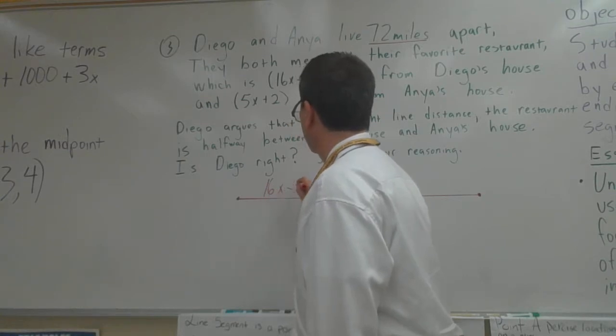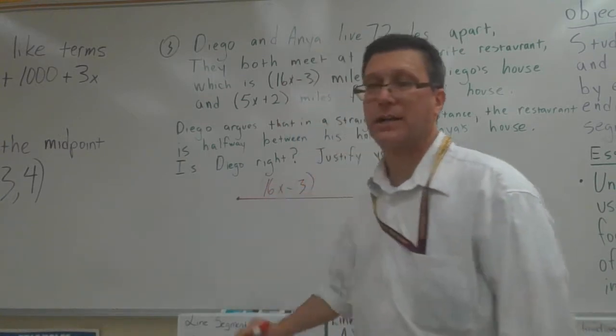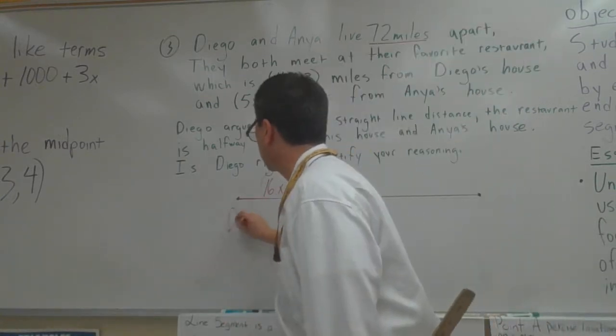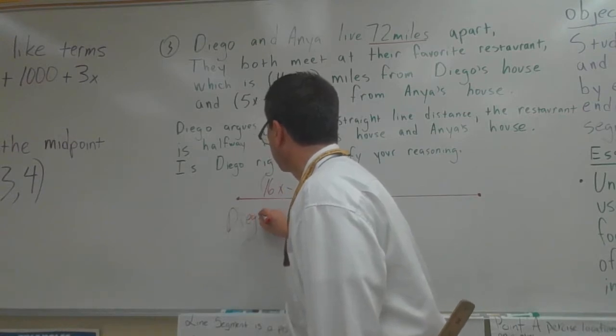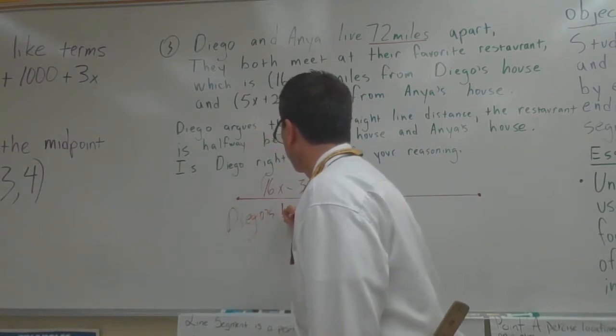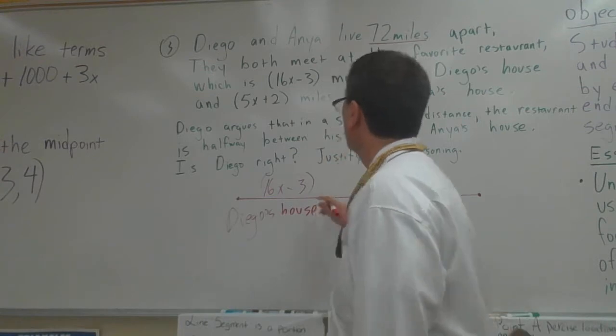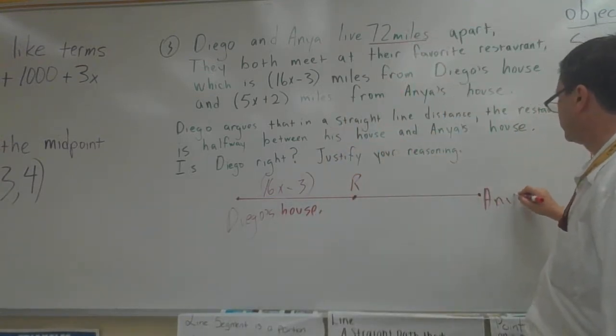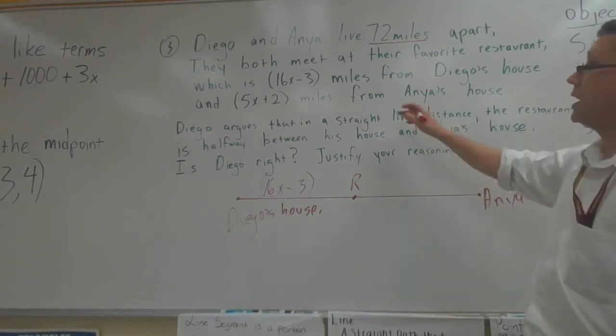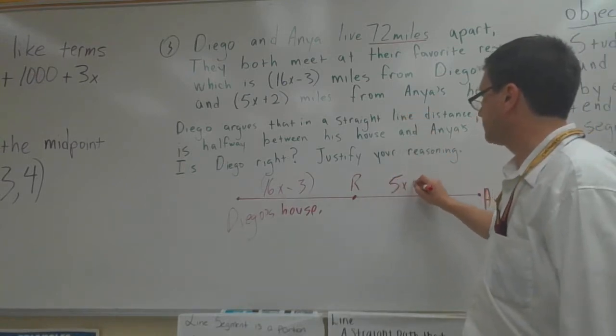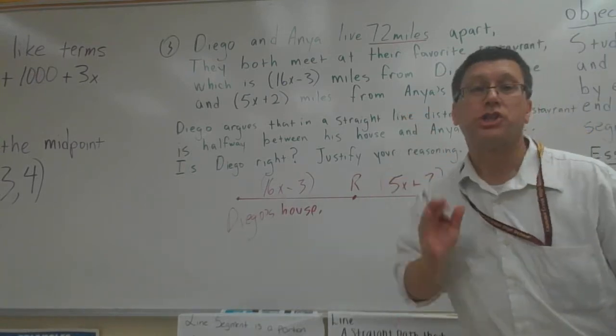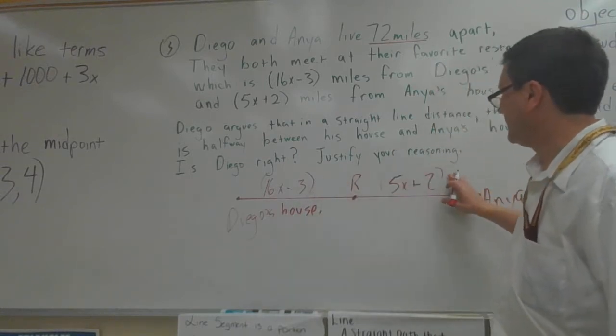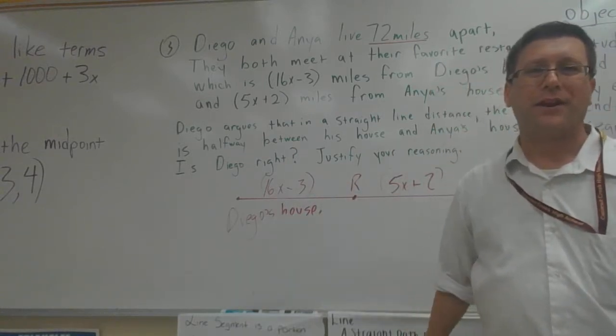16x minus 3 on this side. We're saying this is Diego's house. Here's the restaurant. Here's Anya's house. And she says it's 5x plus 2. So this and this are there.